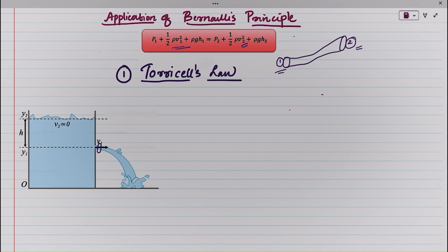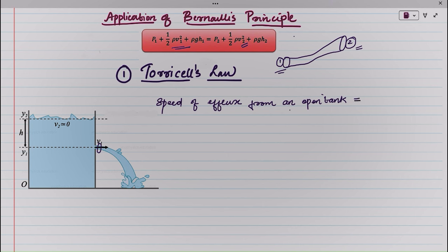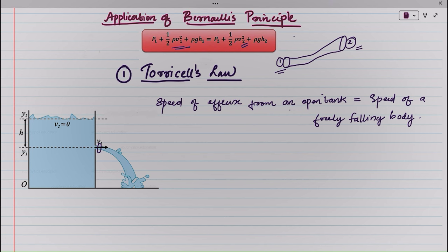Torricelli is a scientist who discovered Torricelli's law. According to him, the speed of efflux from an open tank will be equal to the speed of a freely falling body. Efflux can be defined as fluid outflow.